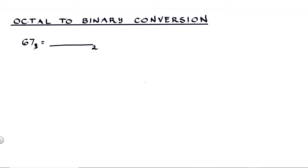First, rewrite this number with enough space in between — so this is 6 and this is 7. Then we are going to convert each digit to its binary equivalent. The octal value is represented by three binary digits: 2 raised to 0 (or 1), 2 raised to 1 (or 2), and 2 raised to 2 (or 4). To convert 7 into binary, we consider that 7 is the sum of 4, 2, and 1 — so all three bits are 1.